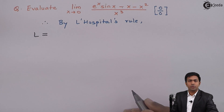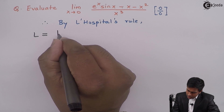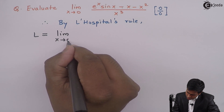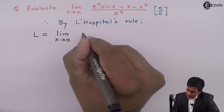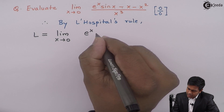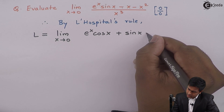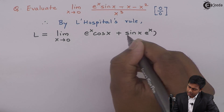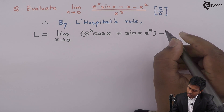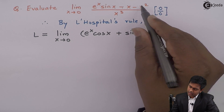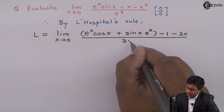Applying L'Hôpital's rule, we find the derivative of the numerator and denominator. So this becomes limit x tends to 0. The derivative of e raised to x · sin x, using the product rule, gives e raised to x · cos x plus sin x · e raised to x. Then minus derivative of x is 1, minus derivative of x squared is 2x, upon the derivative of x cubed which is 3x squared.